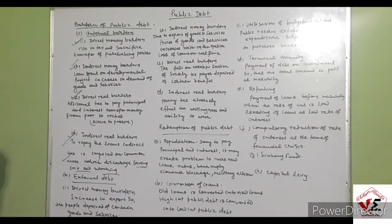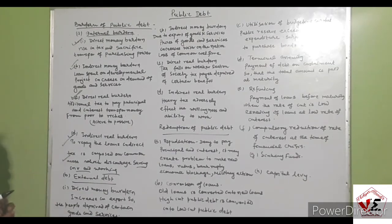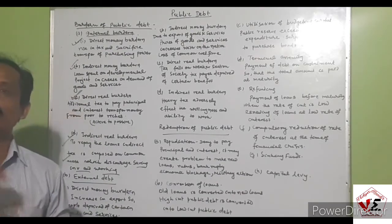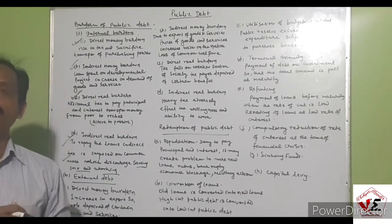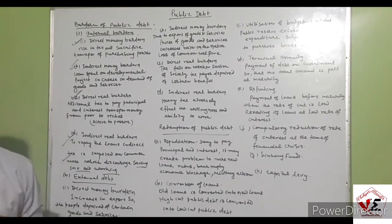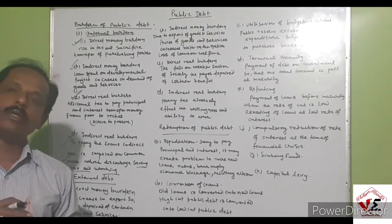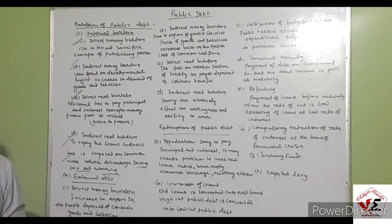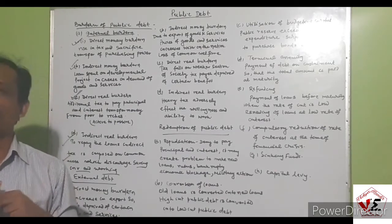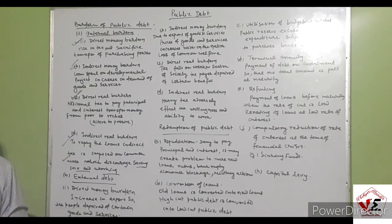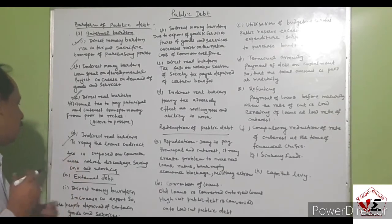For external debt, the government must repay in foreign currency. The direct money burden arises when we increase exports to earn foreign currency to pay the debt. As more goods are exported, fewer goods remain available in the domestic economy, so a large section of society is unable to purchase those goods. Their consumption declines — that is the direct money burden of external debt.